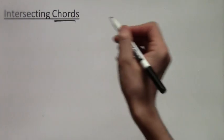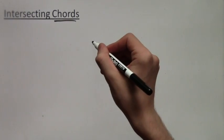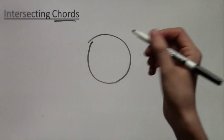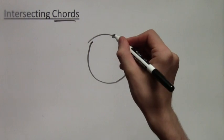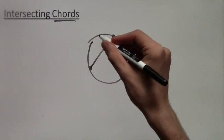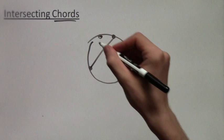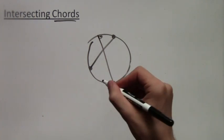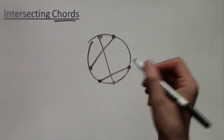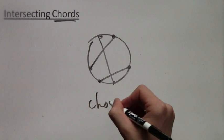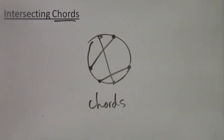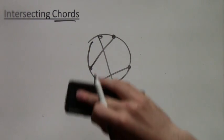In this video lesson, we will learn about intersecting chords. First of all, what's a chord? A chord is when you connect two points on a circle — it's a line segment in the circle. These three line segments I've just drawn are examples of chords.